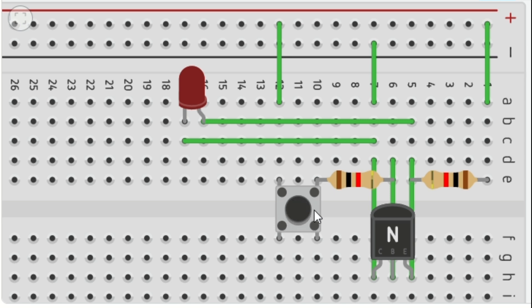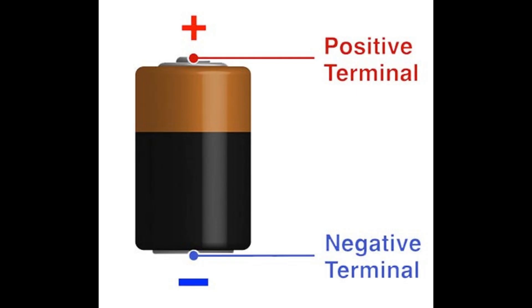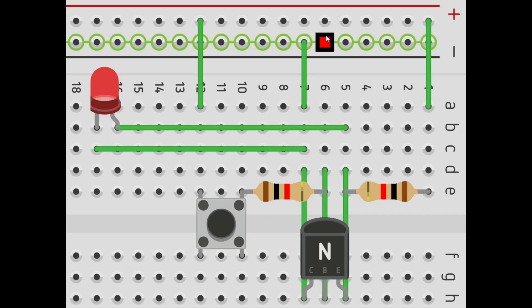Electricity flows through the system from the input which is positive and the output which is negative. In this NOT gate, the current is redirected away from the LED bulb when the button is pressed and causes the LED bulb to turn off.